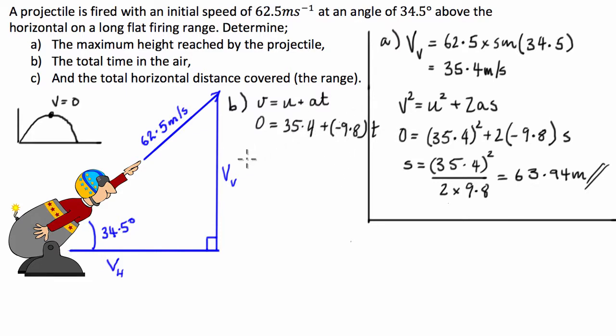So what we can do is we can rearrange this formula, and we have T is equal to 35.4 divided by 9.8, which is equal to 3.63 seconds. Now that's how long it takes to get from here to here.